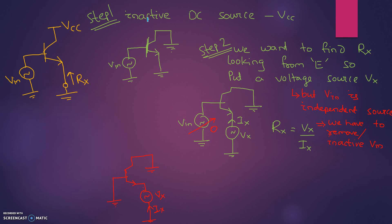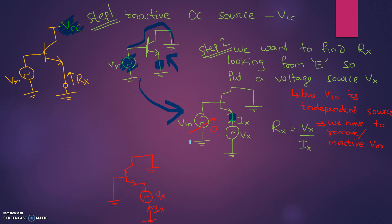Step one is the same: deactivate all the DC sources — VCC is grounded. The circuit is modified accordingly. But since we want to find the resistance seen from the emitter terminal, we have to place a voltage source Vx at that point, which will draw current Ix. We also have to deactivate all independent sources — V_input is independent, so we make V_input inactive, that is zero. The simplified circuit has V_input grounded, VCC inactive, and voltage source Vx placed at the emitter terminal drawing current Ix.